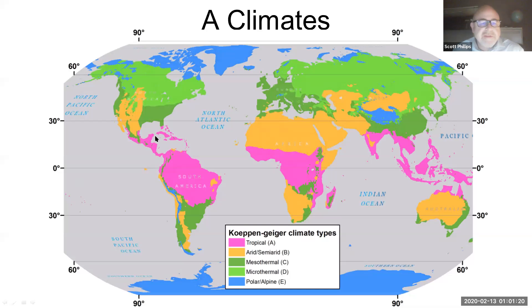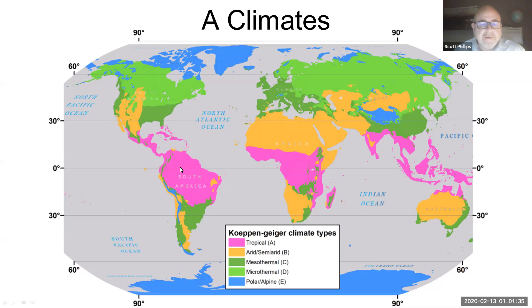These are the A climates, or tropical climates, and if you look at them in purple here, they are in areas near the equator. They extend a little bit into Mexico and in Southeast Asia, but they don't extend as far as California. These are very limited to more tropical or equatorial locations, and they don't extend far enough north to be where we are in California.